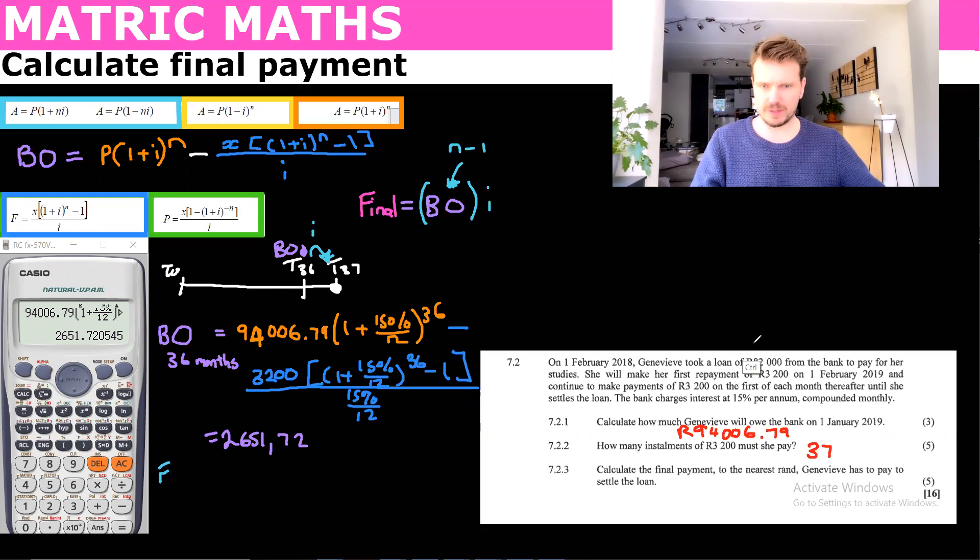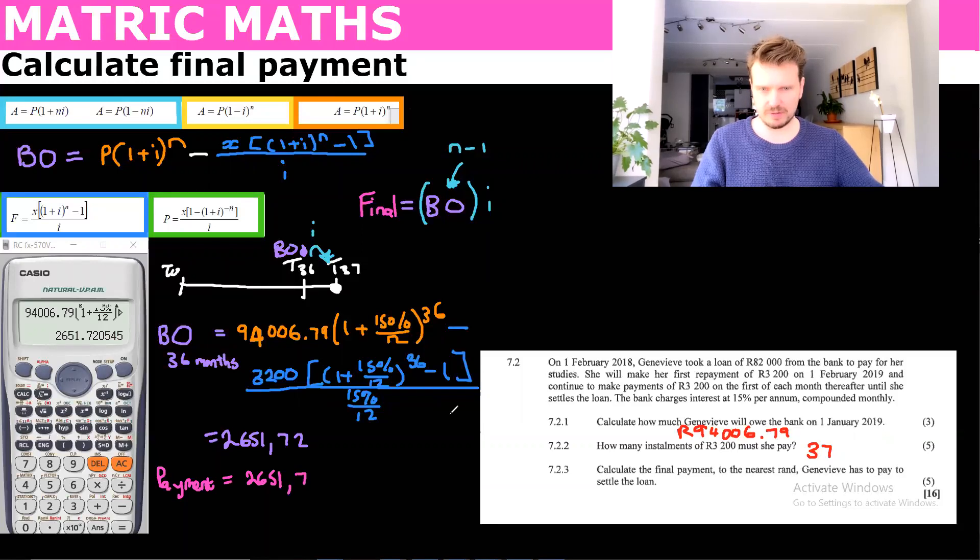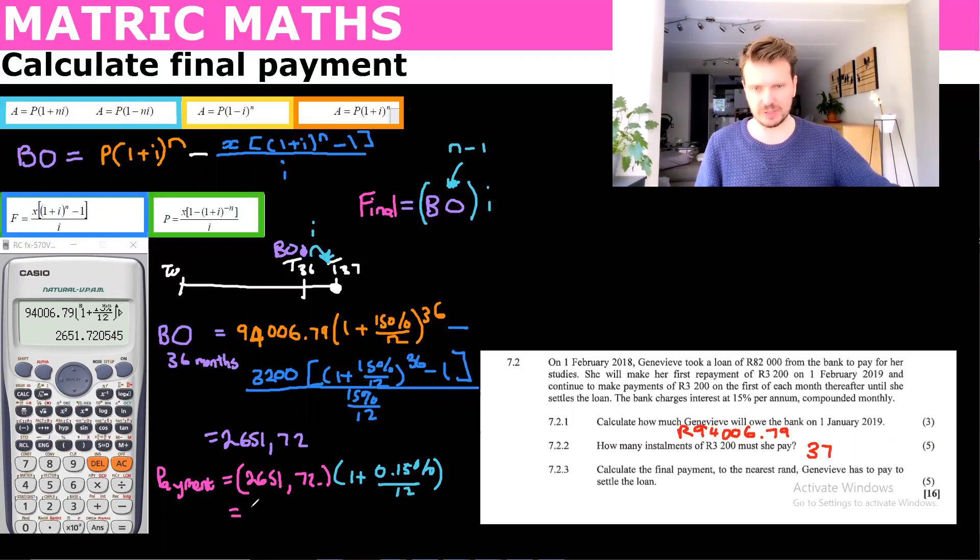Let's just say equals 265172. And then we can, to get our final payment. Oh, we did that in pink, sorry. Okay. We said final payment equals, and then we say the 265172 dot dot dot multiplied by the one month's interest. One plus 0.15% over 12. And we can get that, put that into our calculator.